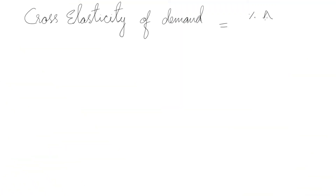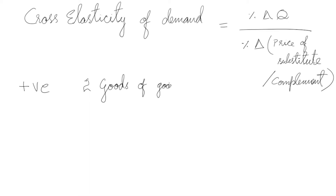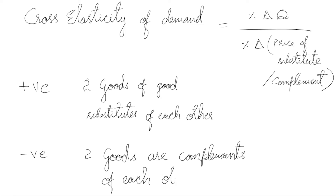Cross elasticity of demand is the percentage change in quantity divided by percentage change in price of the substitute or complement. If it is positive, then the two commodities are substitutes of each other. If it is negative, then the two commodities are complements of each other.